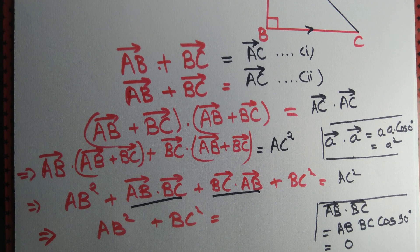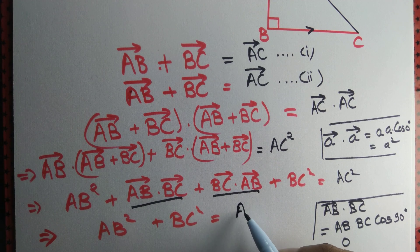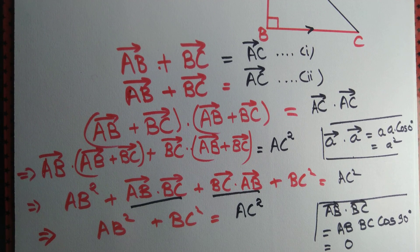So we have left hand side equal to just AB square plus BC square and right hand side equal to AC square. So we have proved Pythagoras theorem using vectors.